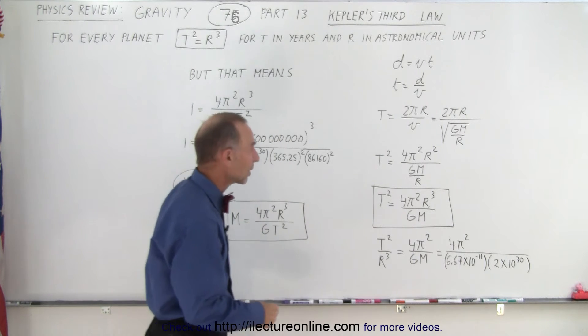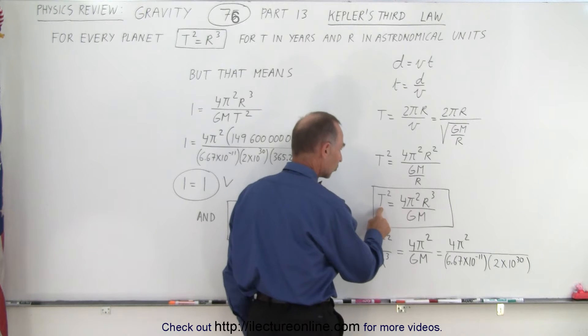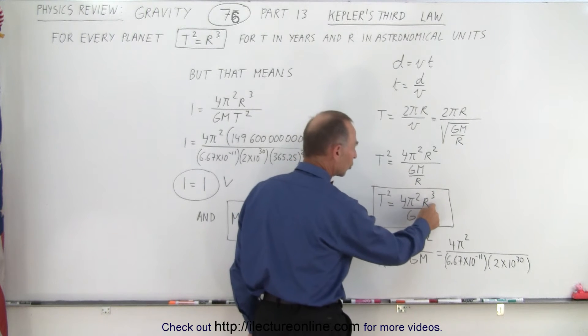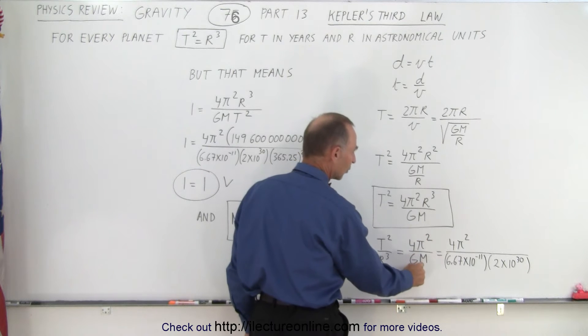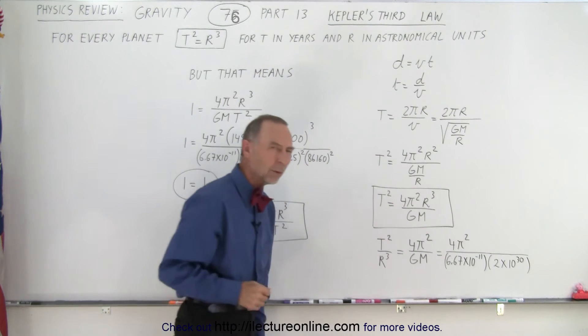That then results in us having a relationship between the period squared and the radius cubed, but the relationship is equal to 4π² over G times the mass of the sun in this case. But that doesn't equal 1.